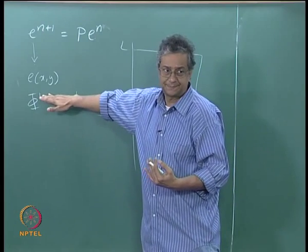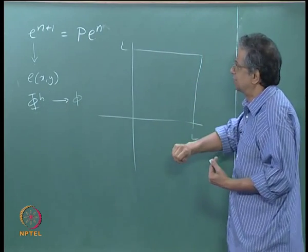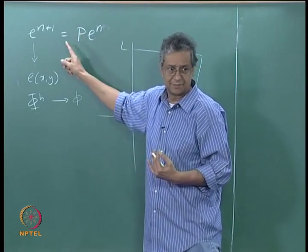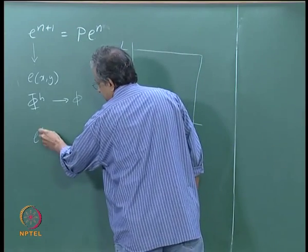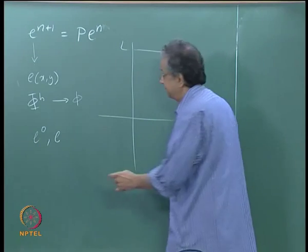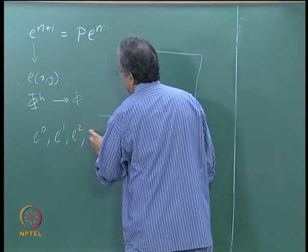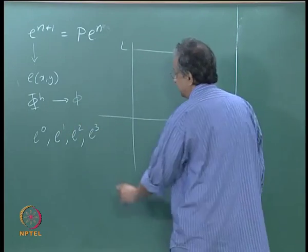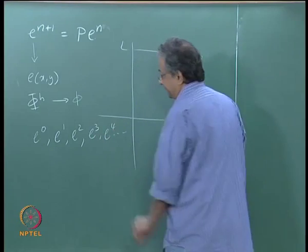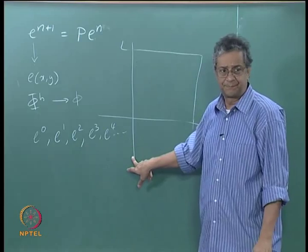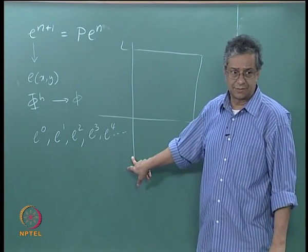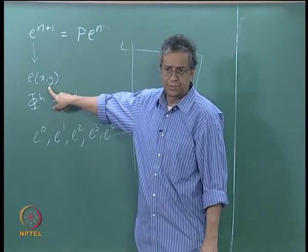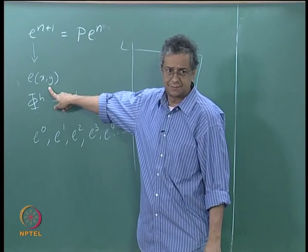So e(x,y) corresponds to that. The question we are asking is: if we go through this sequence e_{n+1} = P·e_n and keep repeating, we generate e_0, e_1, e_2, e_3 — here e is the error, not 2.71 — and so on. Does this sequence converge? What we are proposing to do in today's class is to expand this using Fourier series.